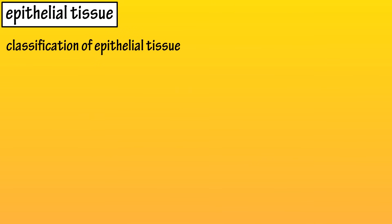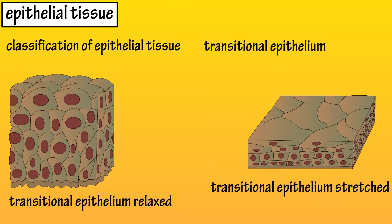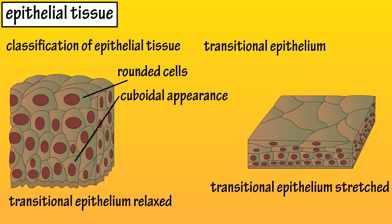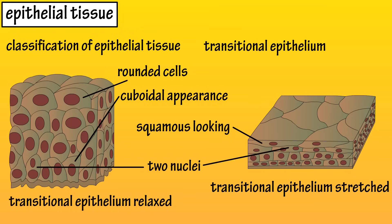Two other notes regarding epithelial tissue. There are also transitional epithelium, which can be in a relaxed or stretched state. In a relaxed state, they have umbrella-looking rounded cells at the top apical surface, and the bottom basal cells appear cuboidal. In a stretched state, the top cells flatten and appear squamous. Some of these cells will also have two nuclei, and transitional epithelium is found in the urinary tract.